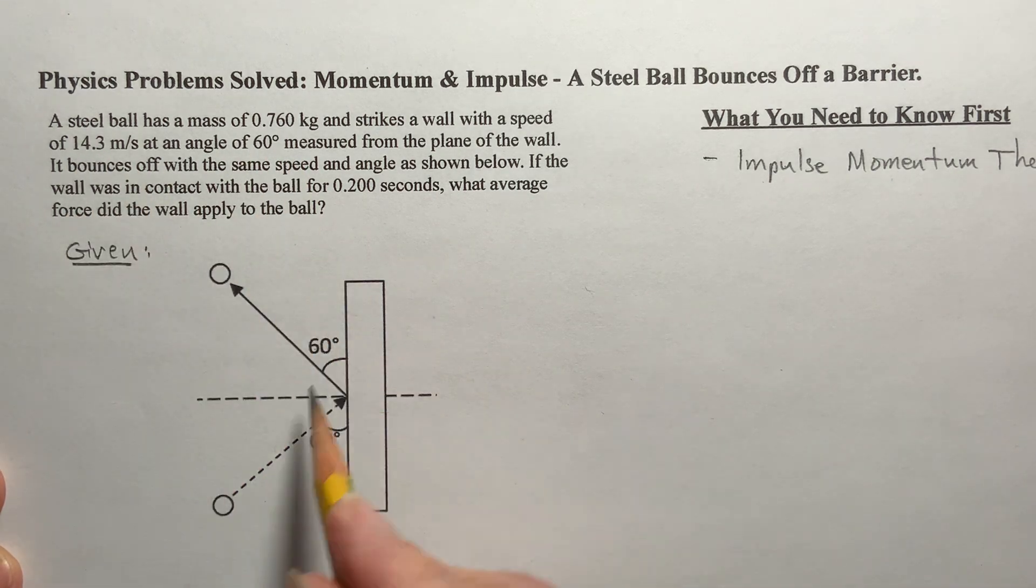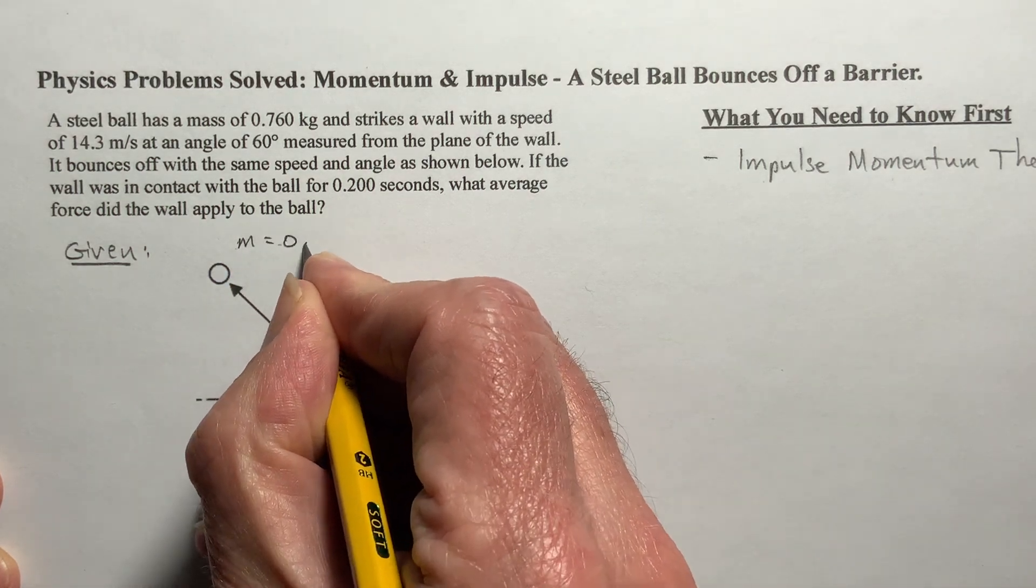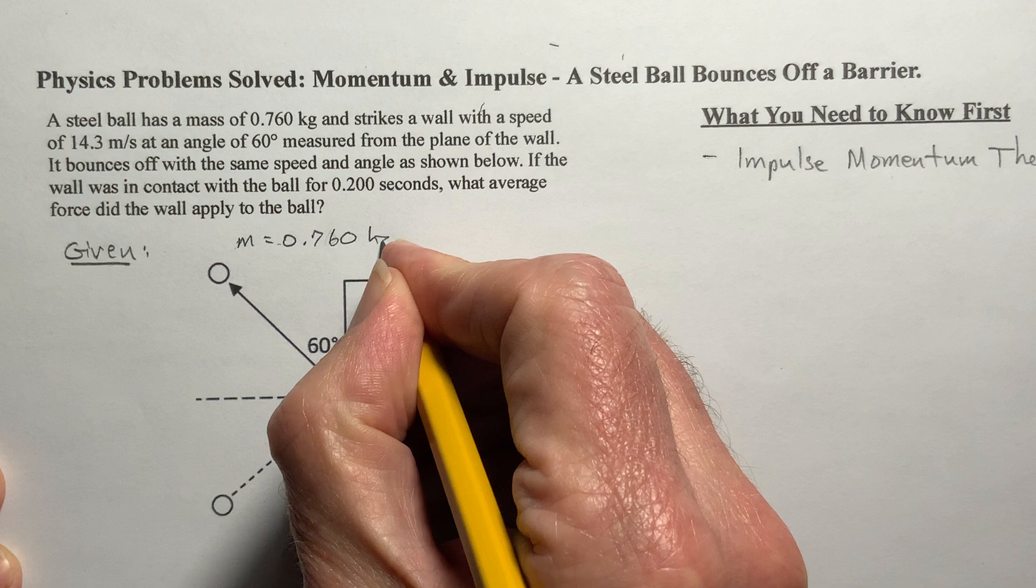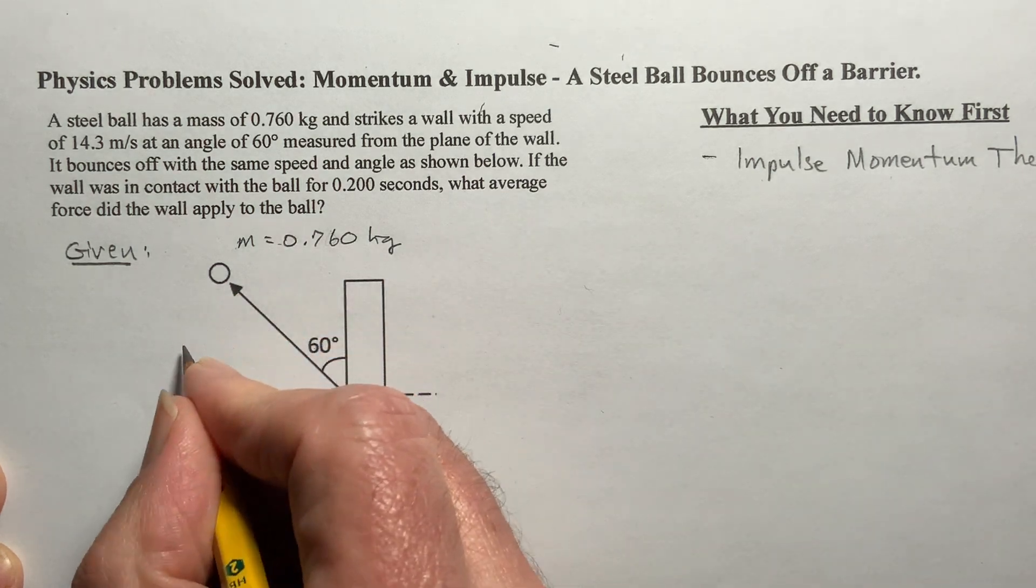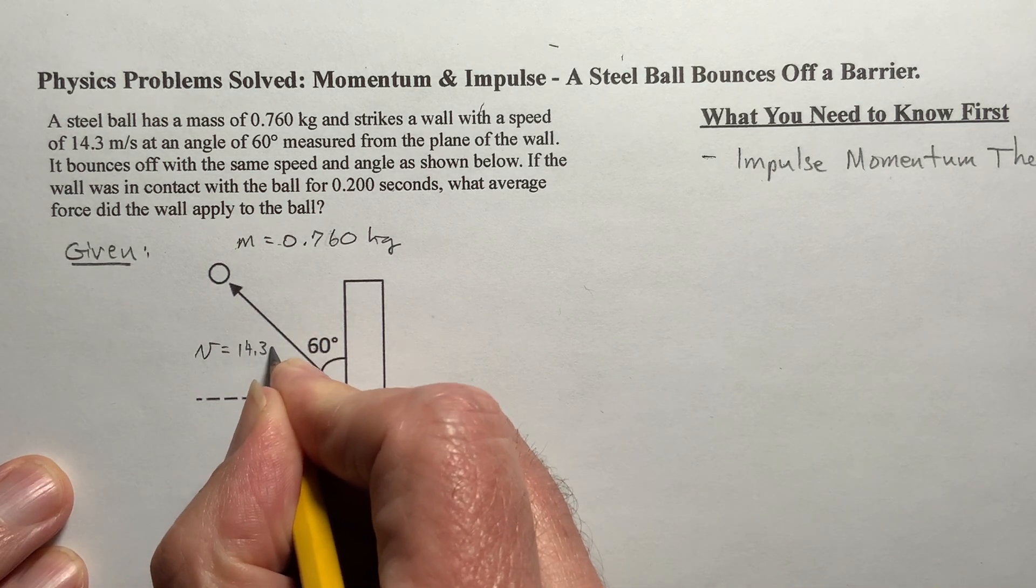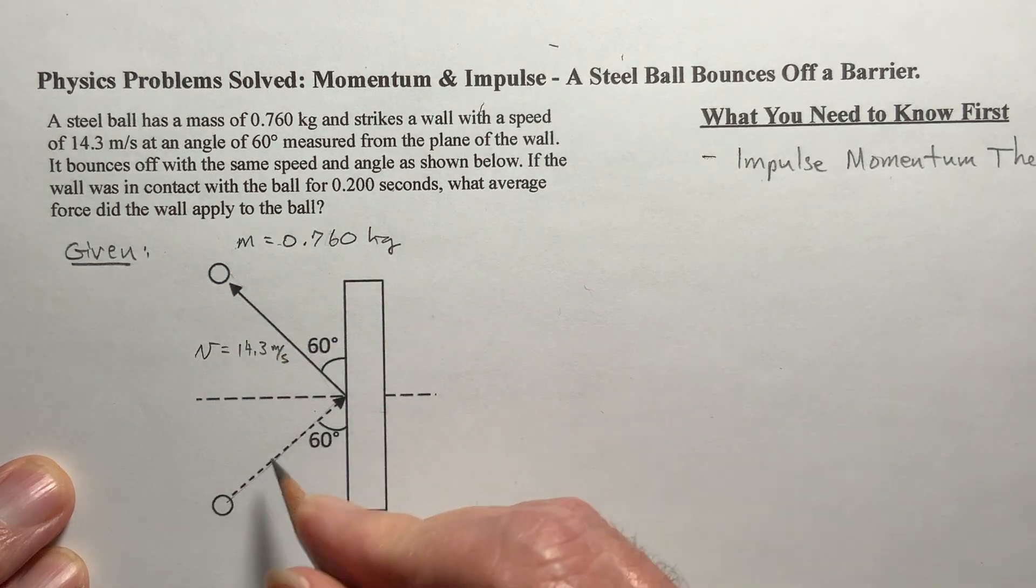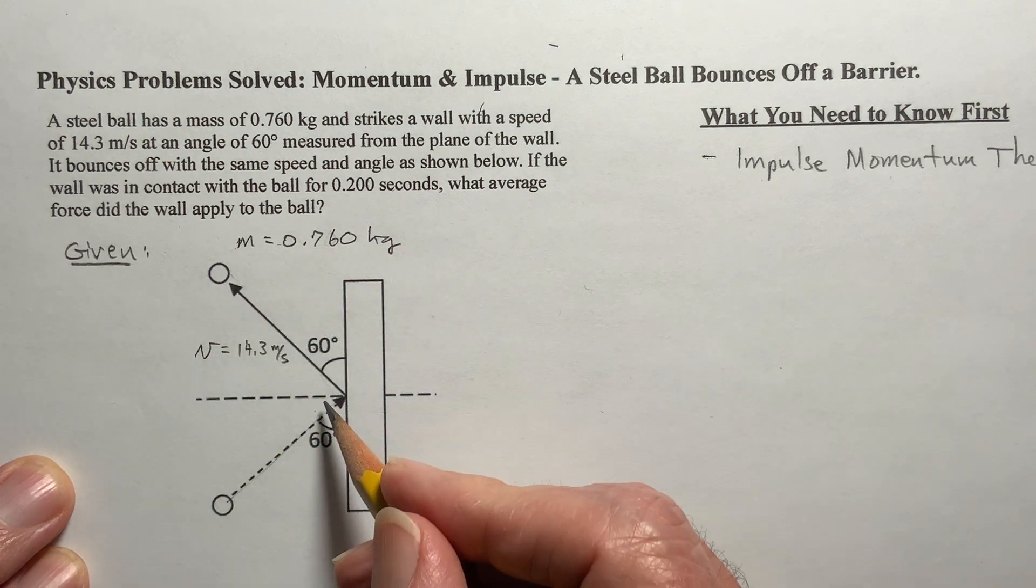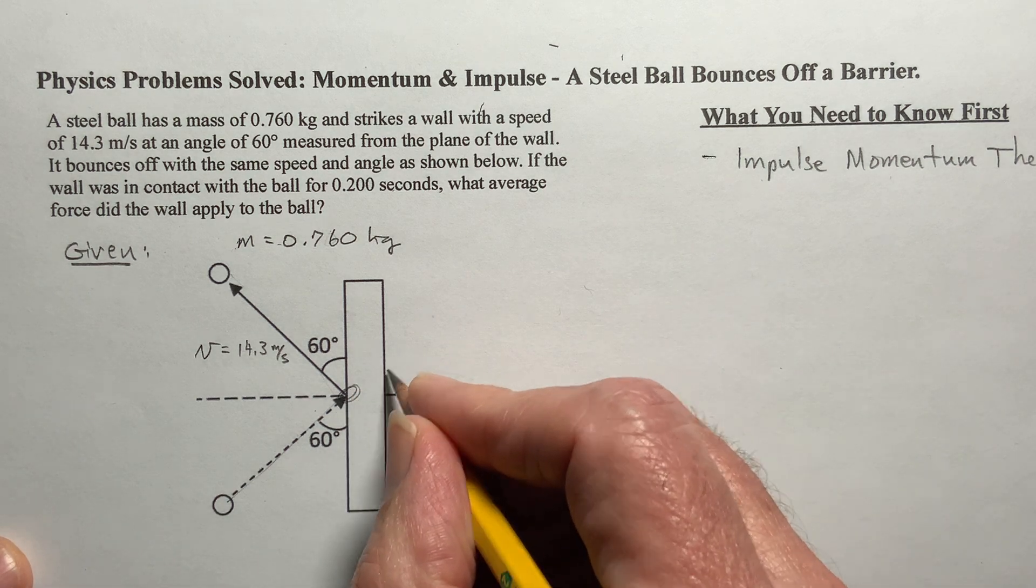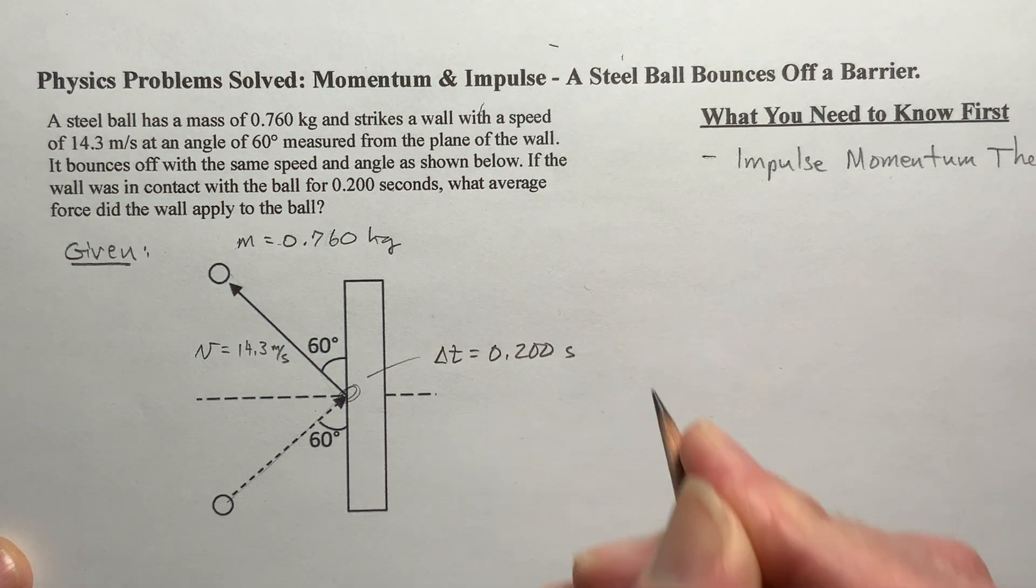So we have a ball, so I'm just going to use this. This ball has a mass of 0.760 kilograms strikes wall and the speed of the ball v is 14.3 meters per second and that's both coming and going. That's what its speed is. So we have the speed which doesn't change and the direction which does change and we know that it's in contact right here for a change in time of 0.200 seconds.